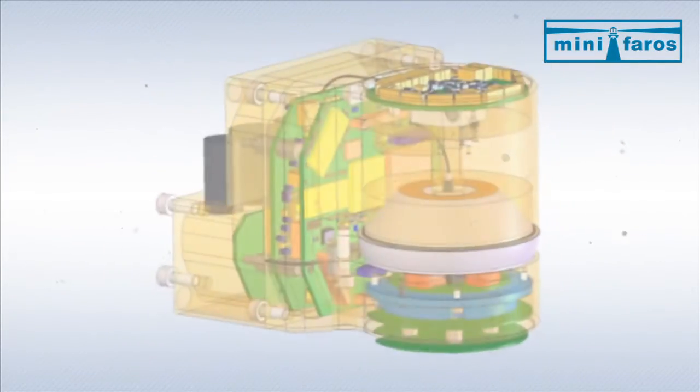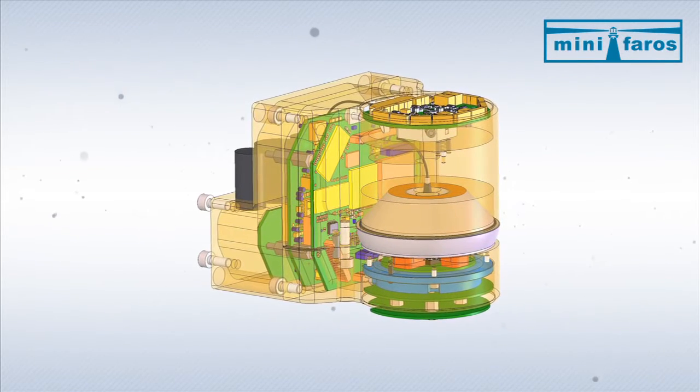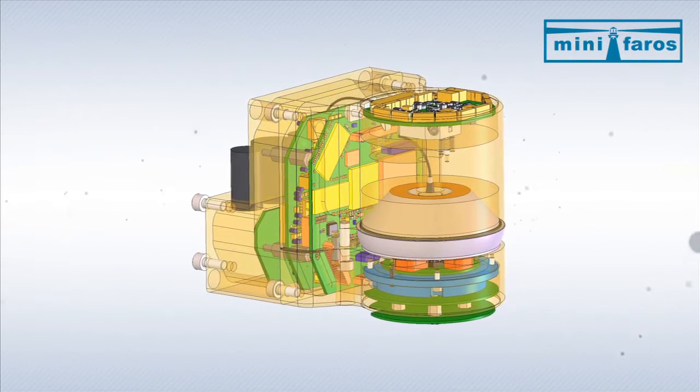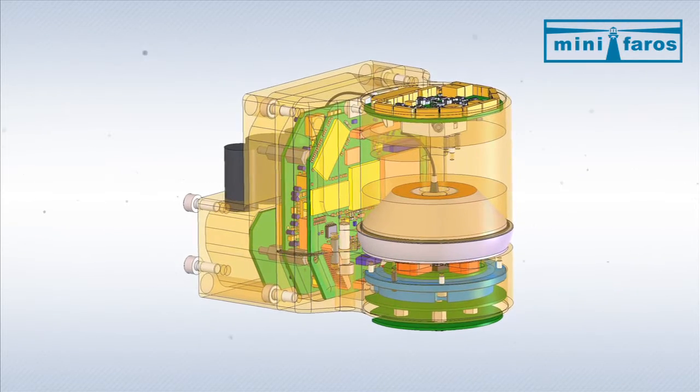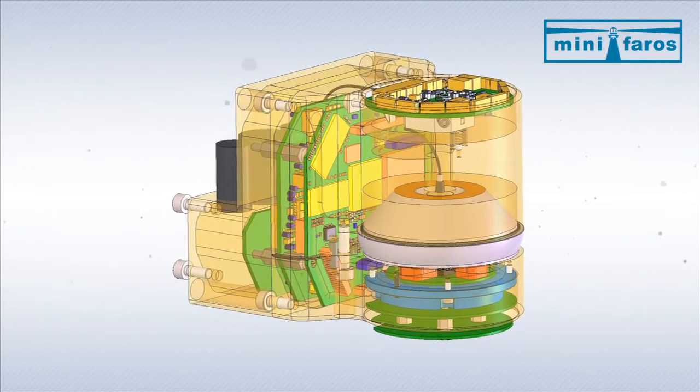The laser scanner consists of a MEMS mirror which is driven and synchronized by the control unit. The laser is triggered by the system control. When the laser beam is actually generated, an electrical signal from the laser starts time measurement at the time to digital converter.